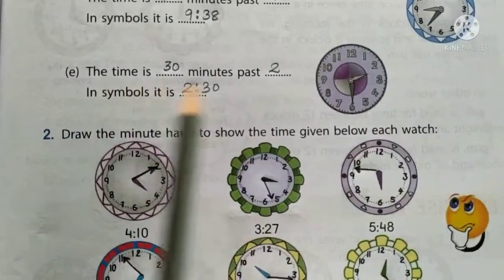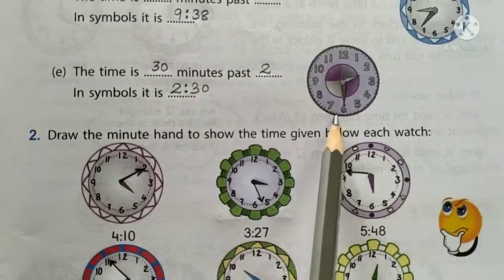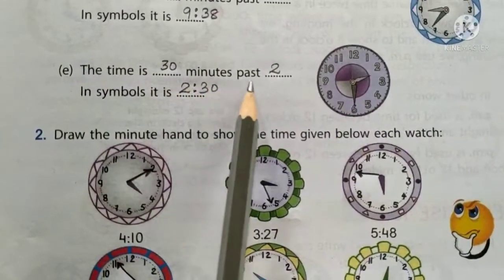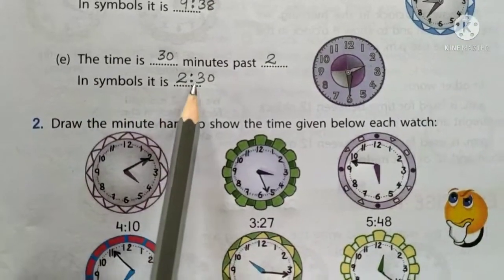Another one. Let us look at this watch. The time is, minute hand is at 6, so 30 minutes past 2. In symbols, it is 2 colon 30.